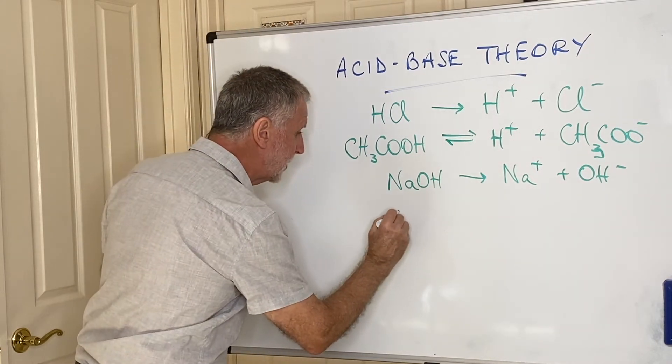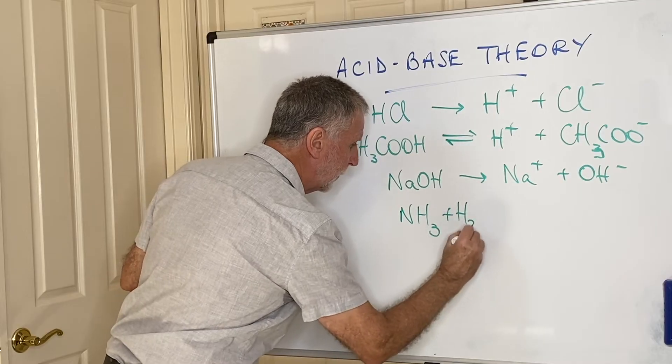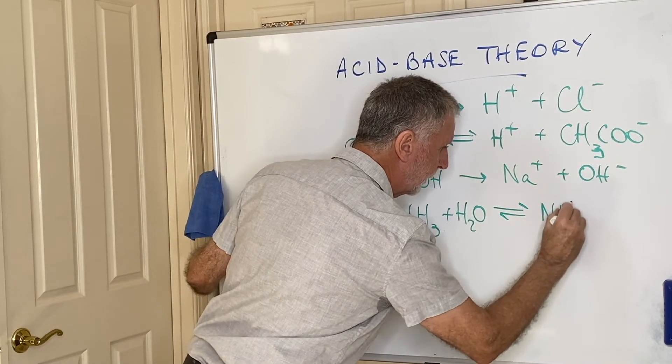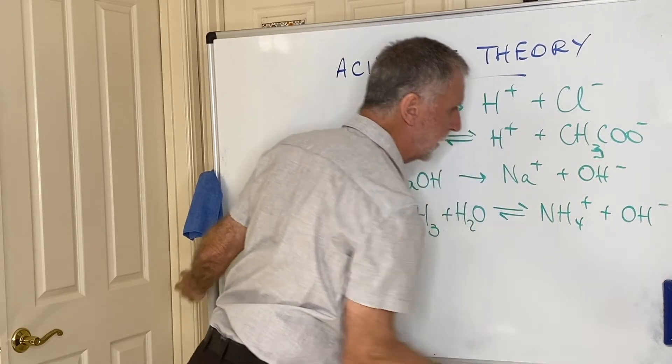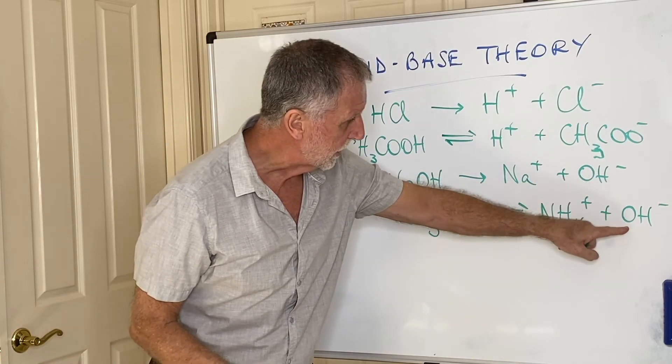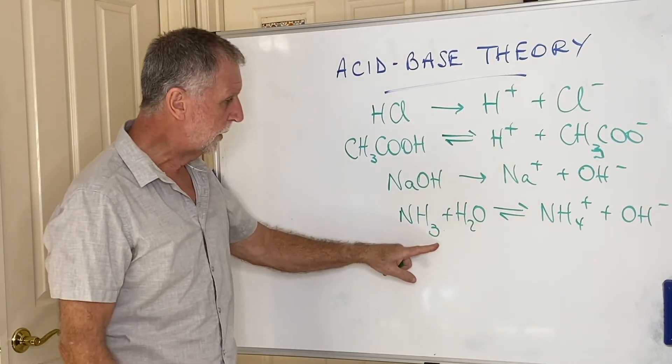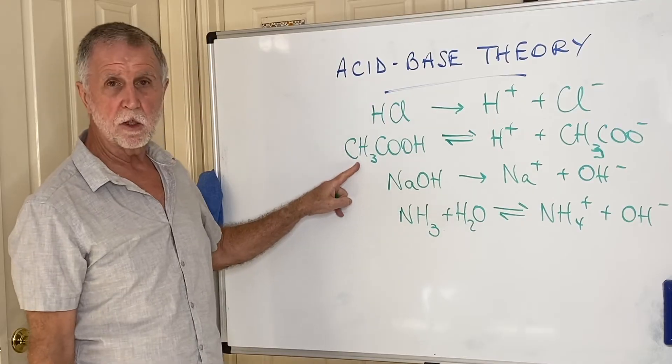The example of a weak base is ammonia, which I do have to put water in now because otherwise I can't get the equation. And that forms NH4+ and OH-. So you'll notice the bases are producing hydroxide ions. This one 100% to the right. This one almost 100% to the left, similar to the carboxylic acid.